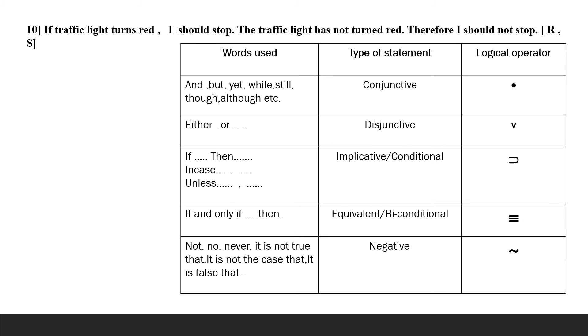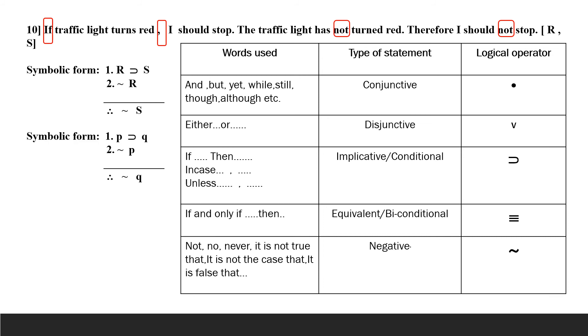The last one: if the traffic light turns red, I should stop. The traffic light has not turned red. Therefore, I should not stop. R stands for 'the traffic light turns red' and S for 'I should stop.' The first premise is R horseshoe S. The second premise is curl R. The conclusion is curl S. The argument form is: P implies Q; not P; therefore not Q.